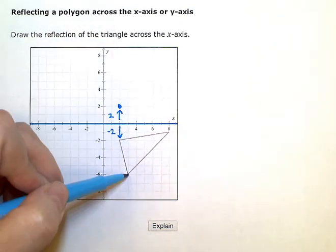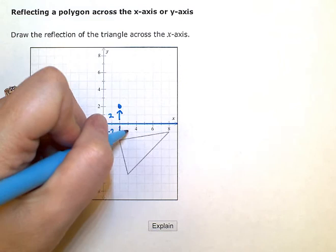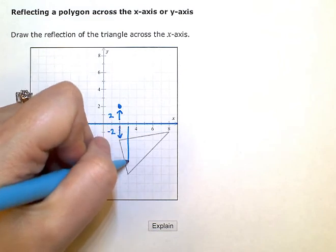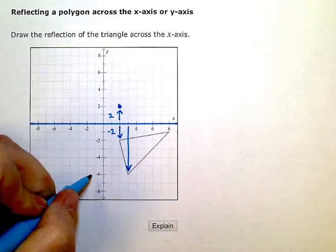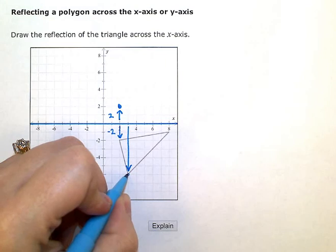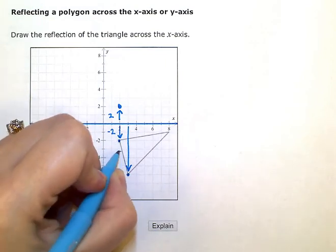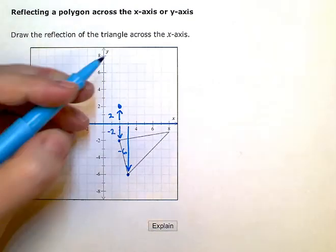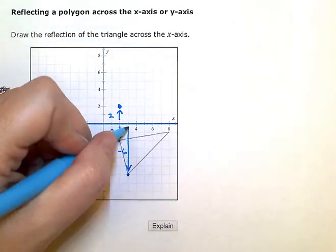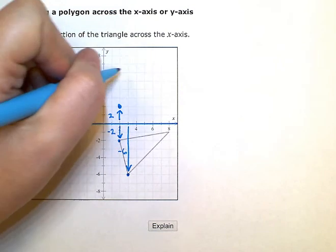This one right here, right now is six units below. So I need a new point that's six units up. So it's going to be up here.